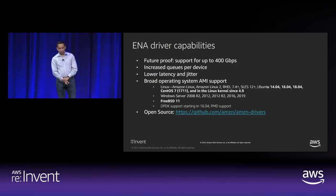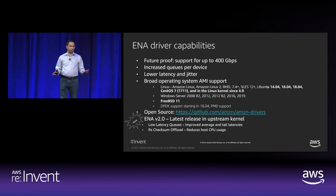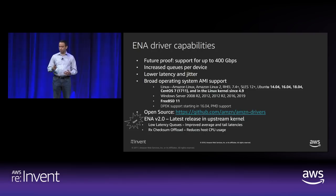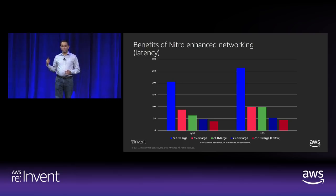ENA reduced latency and jitter as shown. It's now been available for two years with broad OS support across all partners. We recently introduced the ENA 2.0 driver, which is fully backward and forward compatible with 1.x versions. It further improves latency and packet rate performance through low-latency queues that reduce average and tail latencies, and checksum offloads. On the same C5 instance, just updating your driver gives almost 20% reduction in both average and tail latencies.